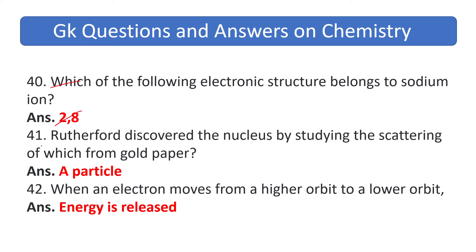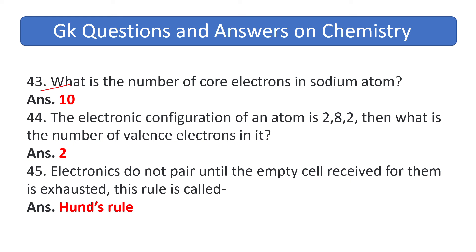Rutherford discovered the nucleus by studying the scattering of alpha particles from gold foil. When an electron moves from a higher orbit to a lower orbit, energy is released. What is the number of inner electrons in a sodium atom? The answer is 10.